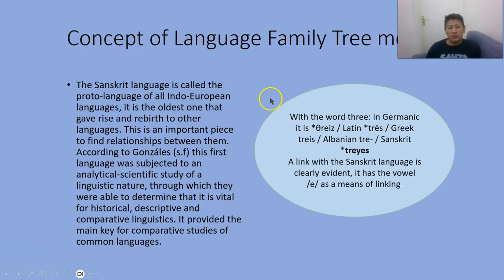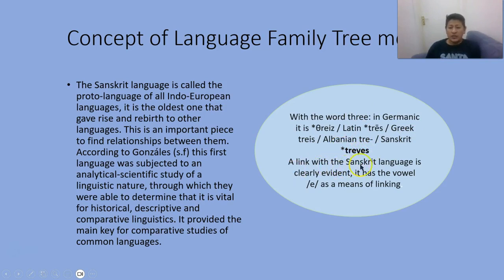Here are some examples of languages coming from Sanskrit. For example, the word for 'three': in German, 'drei'; in Germanic, 'tres'; in Greek, 'treis'; in Albanian, 'tre'; in Sanskrit, 'tri.' If you notice, these words are coming from the same root. The link with the Sanskrit language is clearly evident — it has the vowel 'e' as a means of linking. If you notice, most of those words are similar, and they are all coming from Sanskrit.